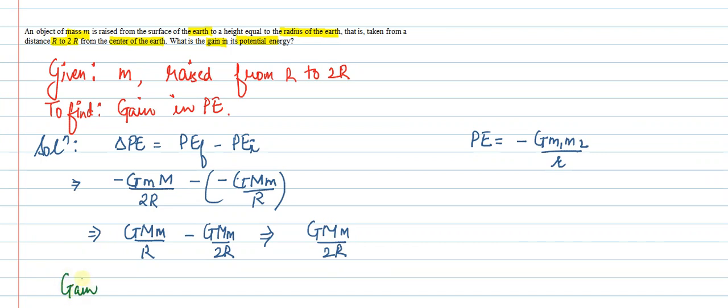Gain in potential energy in moving from r to 2r is equal to G m M by 2r. This is our answer. Thank you.